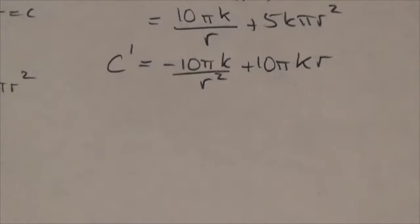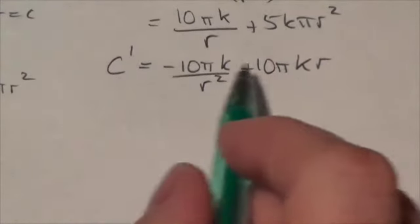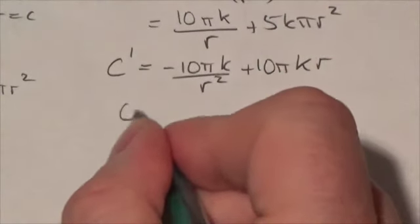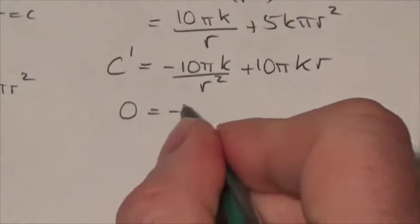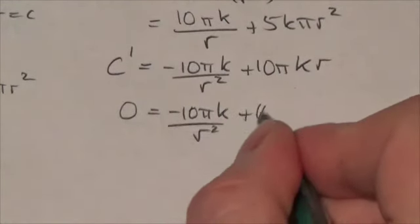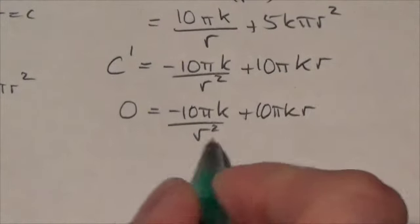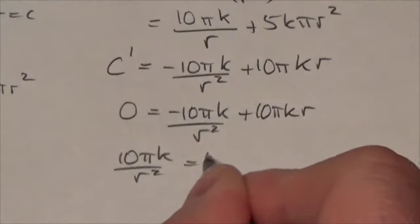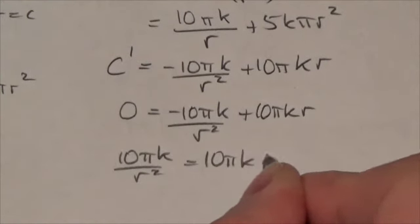And so now to maximize that, what we're going to do here is we're going to set this thing equal to 0. And this will end up being negative 10πk over r² plus 10πkr. Bring that over, we're going to get 10πk over r² equals 10πkr.